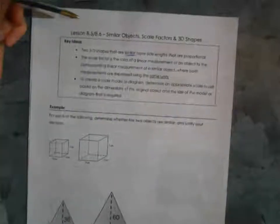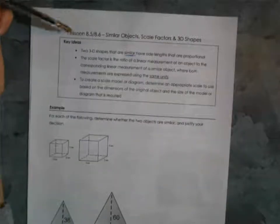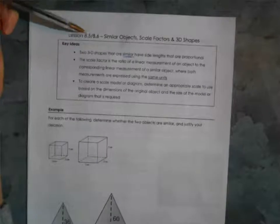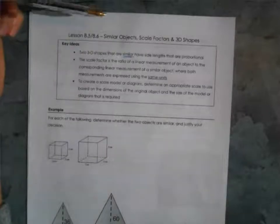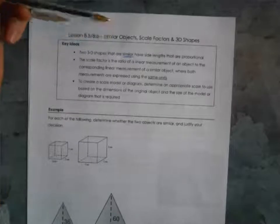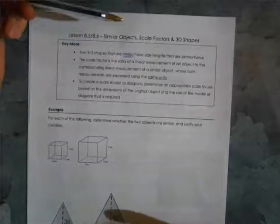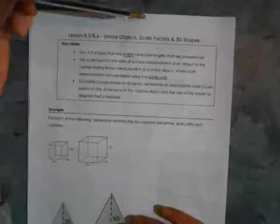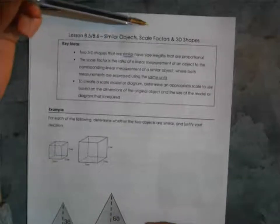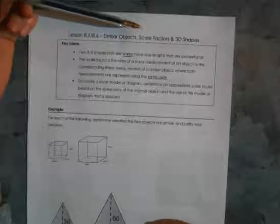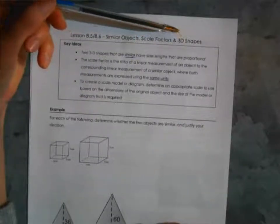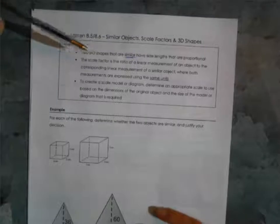Today we're looking at lessons 8.5 and 8.6, wrapping the last two sections into one lesson. We've previously looked at scale factors for linear measurements and then for two-dimensional objects, and today we're expanding on that by looking at three-dimensional shapes.